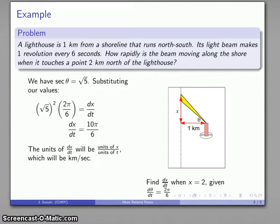One last step, we want to identify the units. dx/dt is going to be units of x over units of t, and x is measured in kilometers, and t is measured in seconds. So dx/dt is going to be measured in kilometers per second.